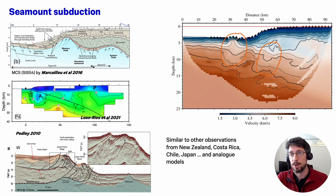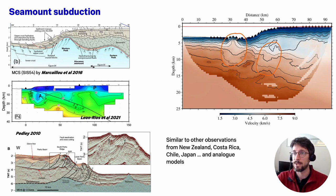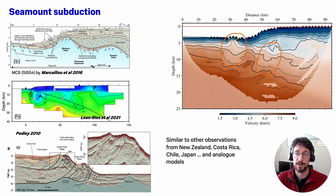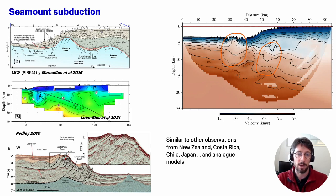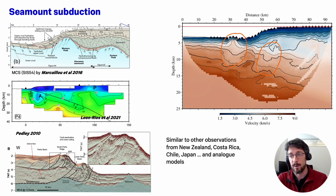The picture that is emerging is of small but sharp seamounts disrupting the forearc, causing first uplift and thrust faulting, and then in the lee of the seamount, subsidence and gravitational collapse. This results in a disrupted plate interface and low inter-seismic coupling. This is similar to what has been observed for example in New Zealand by Pedley et al. 2010, but also in other places like Costa Rica and Japan, and in analog experiments.